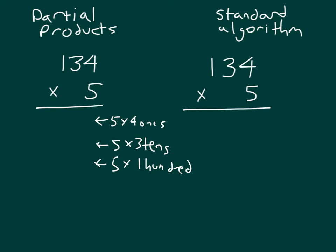Let's write what each of those is worth. 5 times 4 1s is 20 1s, which is 20. 5 times 3 10s? 150. And 5 times 100 is 500. Adding those together, we will get our answer of 670.